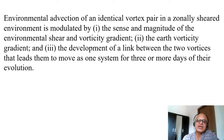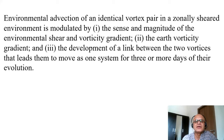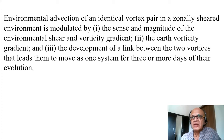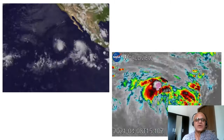The environmental advection of an identical vortex pair in a zonally sheared environment is modulated by: the sense and magnitude of the environmental shear and the vorticity gradient; the Earth's vorticity gradient — the beta effect, since we are on a beta plane; and the development of a link between the two vortices that leads them to move as one system. This occurs less than two times per year in the North Atlantic and two to three times per year in the typhoon region.